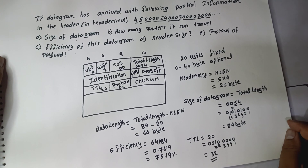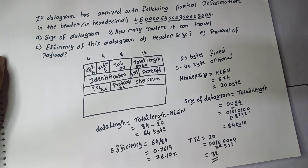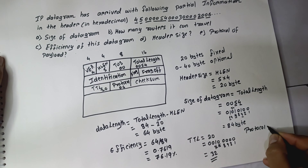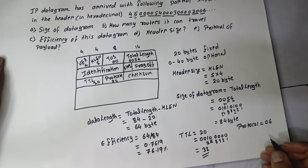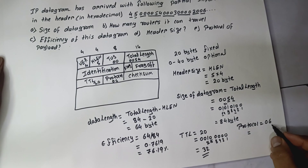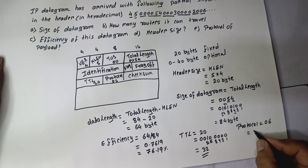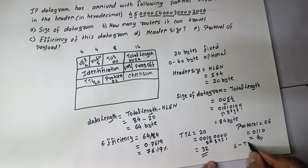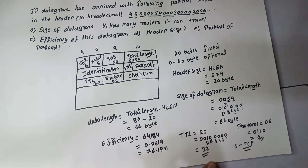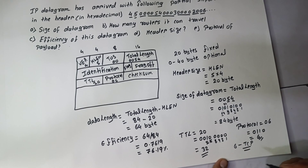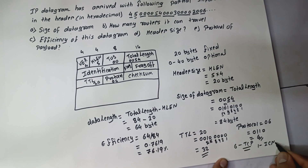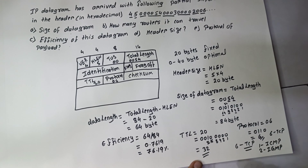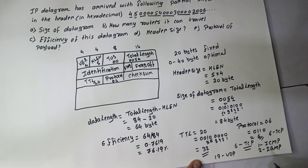There is one more question regarding the protocol of the payload. The protocol field contains the value 06 in hexadecimal. Converting 6 to binary gives 00000110, which is 6 in decimal. The value 6 represents the TCP protocol, meaning this datagram is serving the TCP protocol. For reference: protocol value 1 is ICMP, 6 is TCP, and 17 is UDP.